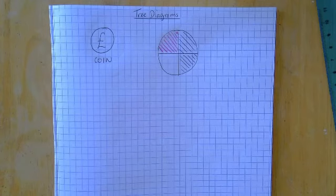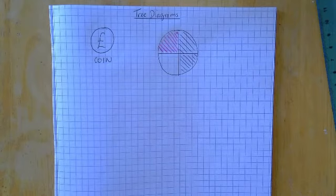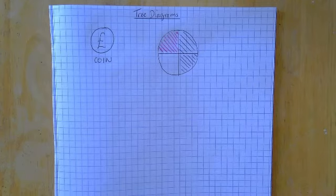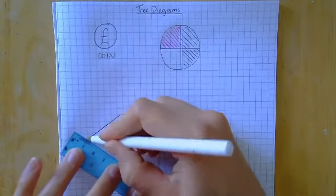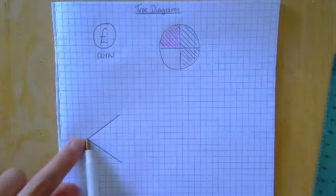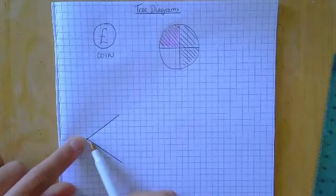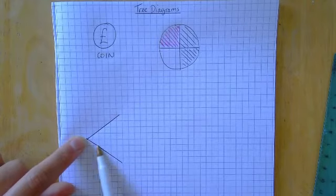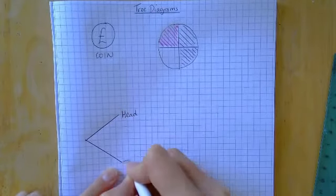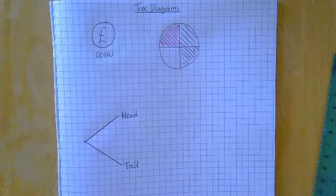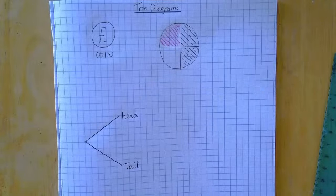So we're going to toss a coin and spin the spinner and see what we get. When we toss a coin, there are two outcomes — I could get a head or I could get a tail. We represent that with the first set of branches in my tree diagram. Draw two branches, one going up and one going down, and write 'head' at the end of one branch and 'tail' at the end of the other.